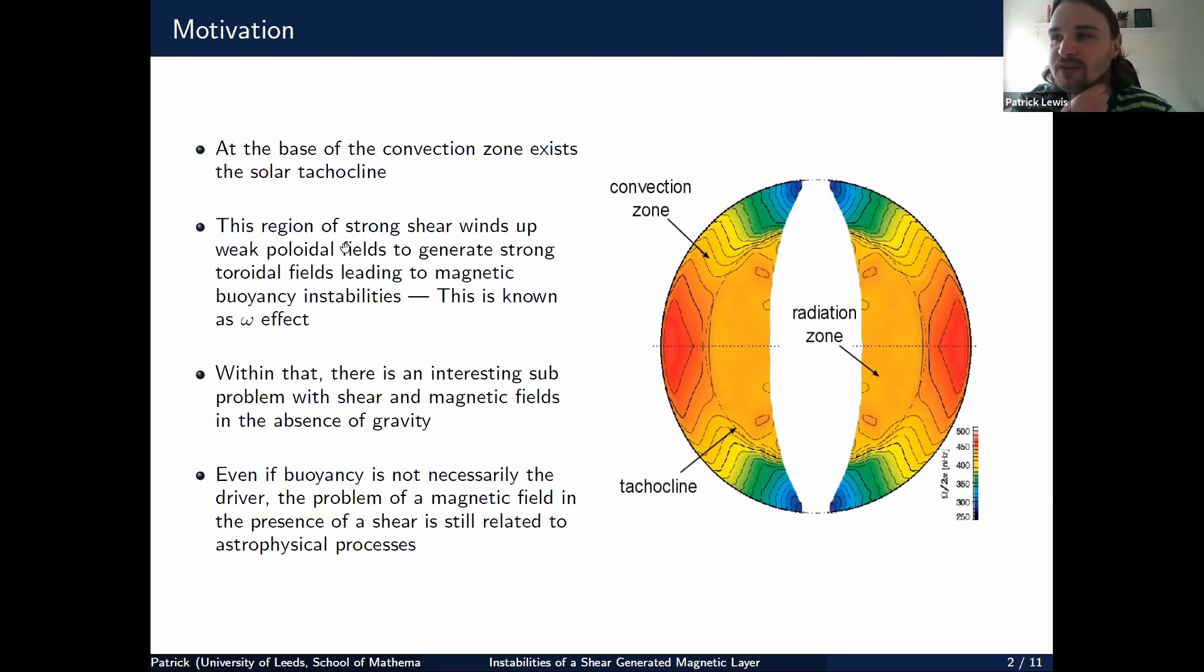This gives an overall picture of the sun. At the base of the convection zone exists the solar tachocline, a region of strong shear which winds up weak poloidal fields to generate strong toroidal fields leading to magnetic buoyancy instabilities. This is known as the omega effect. Within that, there's an interesting sub-problem with shear and magnetic fields in the absence of gravity. Even if buoyancy is not necessarily the driver, the problem of magnetic field in the presence of shear is still related to astrophysical processes.